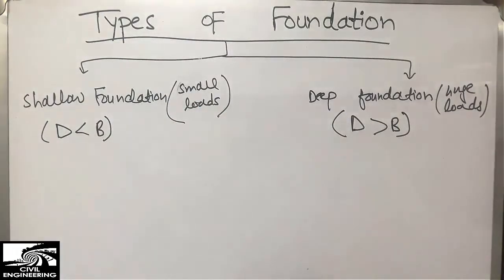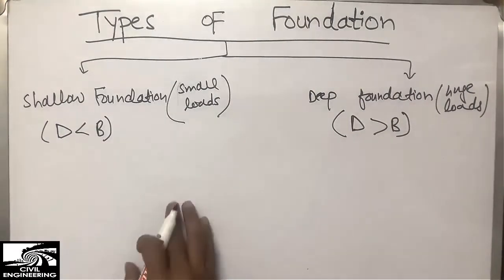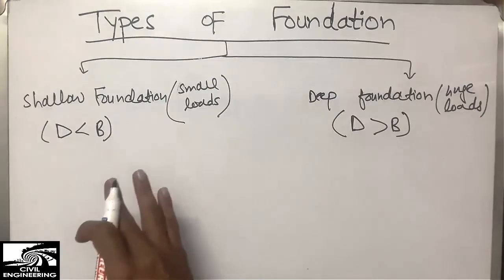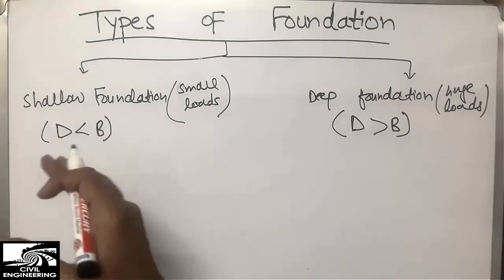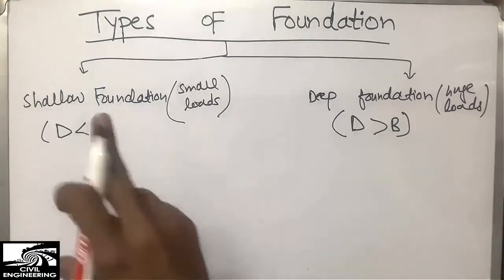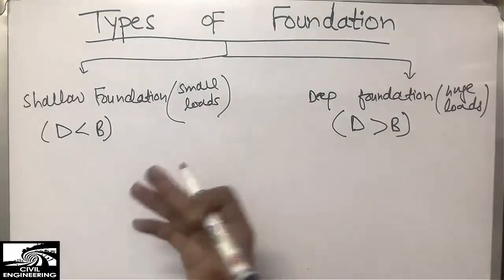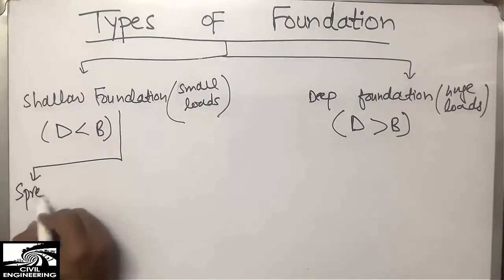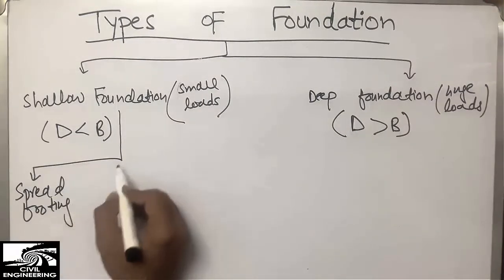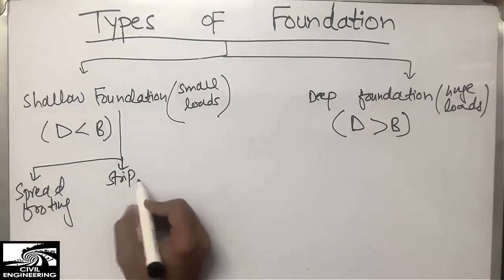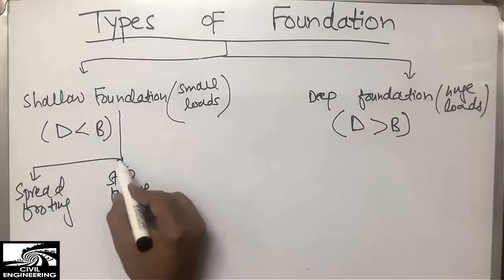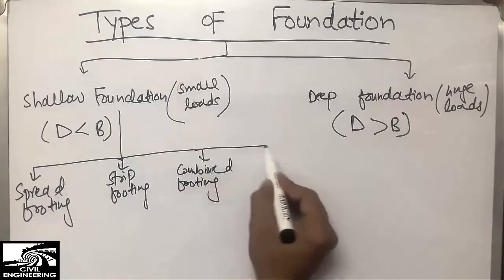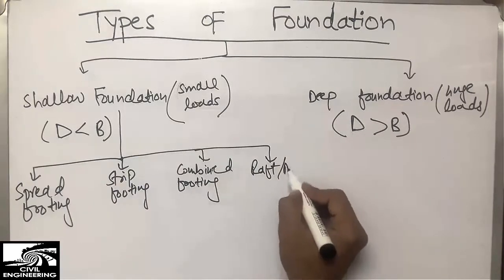Now we are going to discuss the types included in shallow as well as deep foundation, because different types are used in different conditions according to the load and soil condition. The shallow foundation is further classified into four main types: the first is spread footing, the second is strip footing (also called wall footing), the third is combined footing, and the fourth is raft or mat footing.